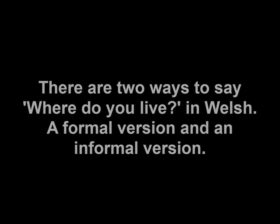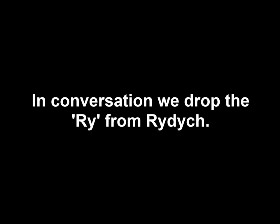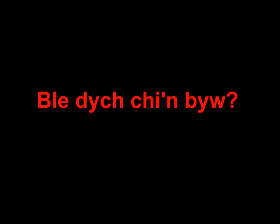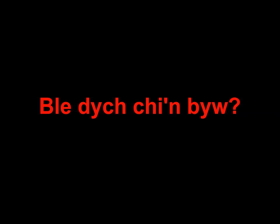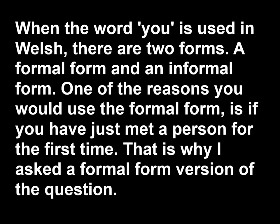I'm from South Wales, so I naturally asked the South Walian dialect version of the question. We tend to drop the R-Y, the R sound from 'rydych'. So I said: Ble rydych chi'n byw? — Where do you live? I'll slow it down. This is a formal way of asking someone where they live.